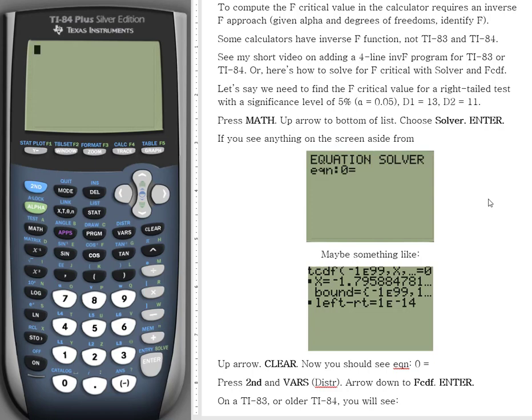Let's say we need to find the F critical value for a right-tailed test with a significance level of 5%, D1 equal to 13, and D2 equal to 11.